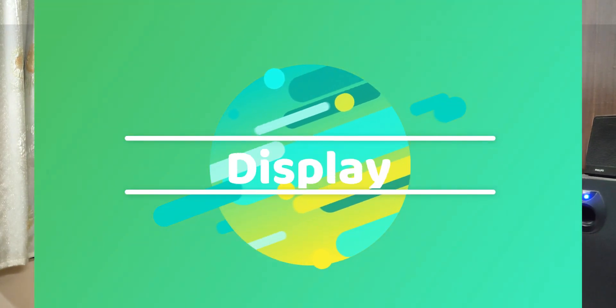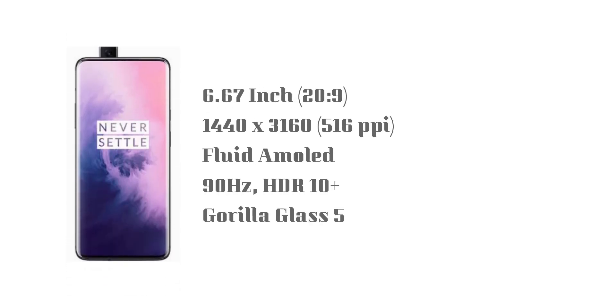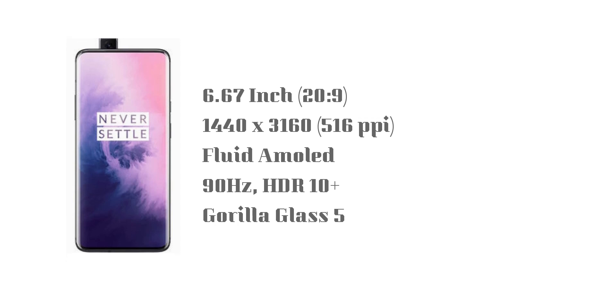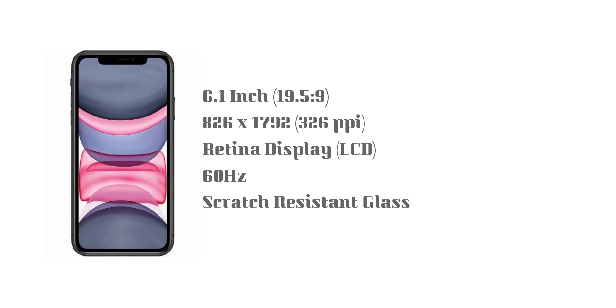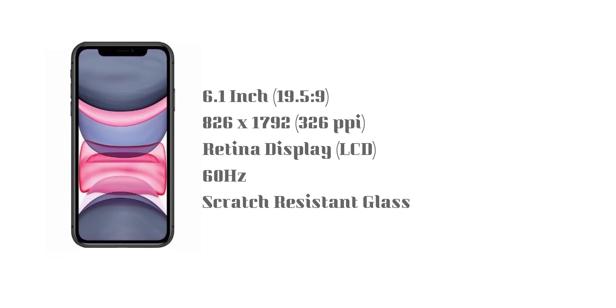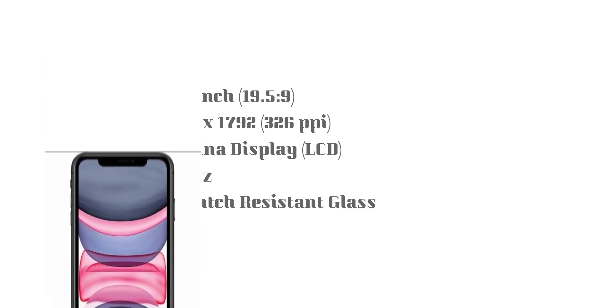Next is the display. The display winner is the OnePlus 7T Pro because you have an AMOLED screen — a fluid AMOLED display. It has a 90Hz refresh rate and a 2K display with 516 ppi. The iPhone has an LCD display with 828x1792 resolution and 326 ppi. The display size is 6.01 inches for iPhone 11, and 6.1 inches for the Apple display.